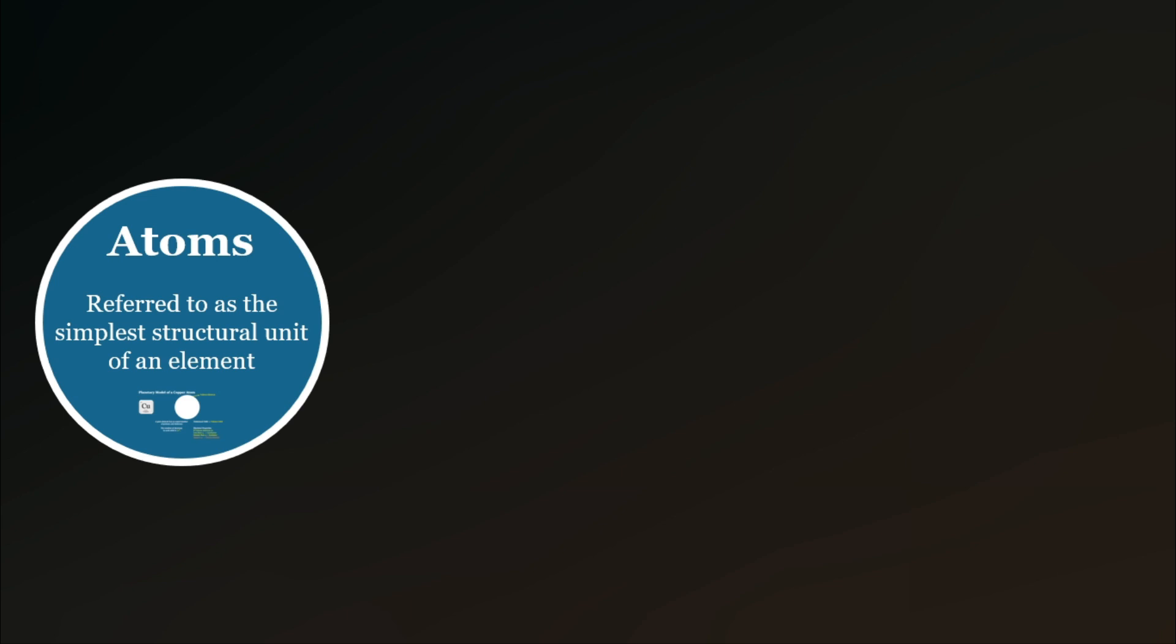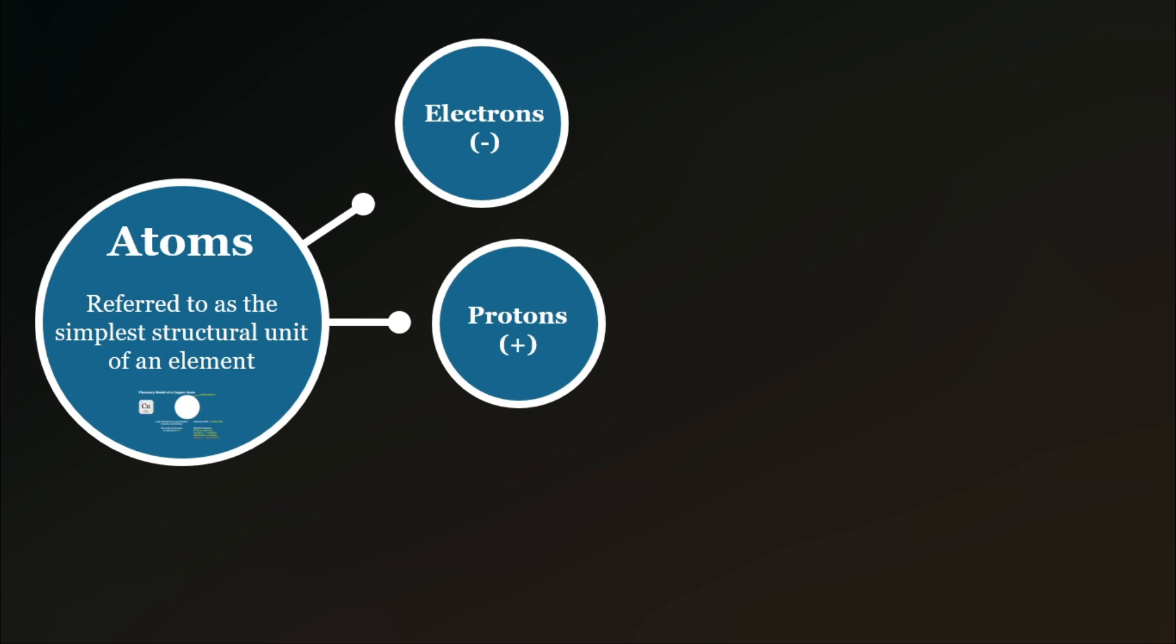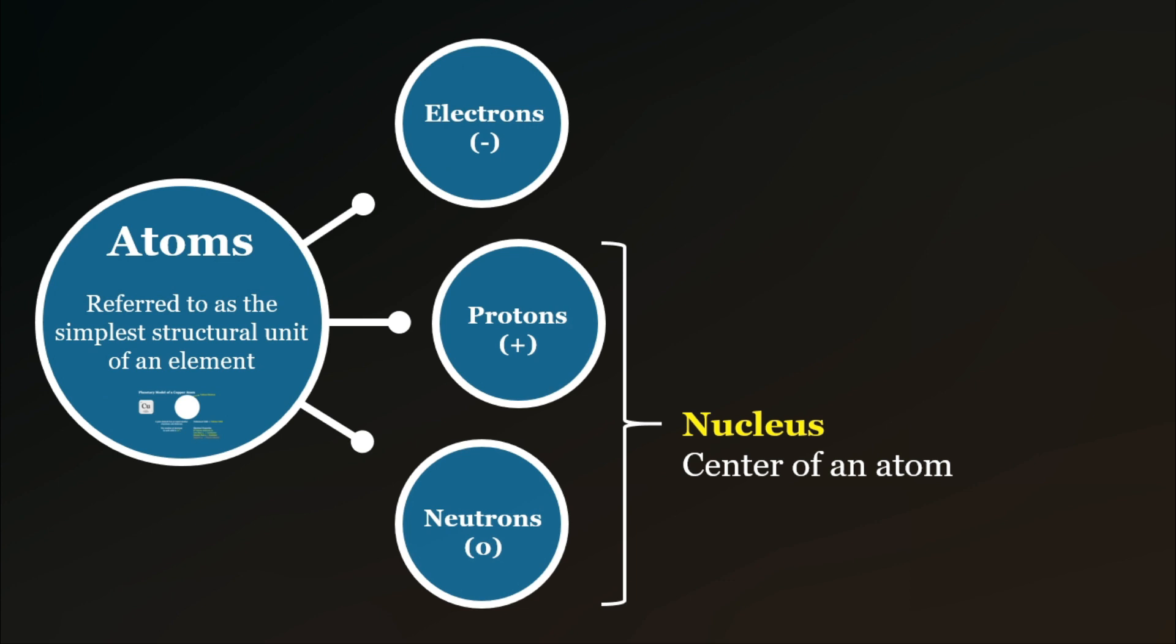So what are these subatomic particles? The subatomic particles are composed of the negatively charged electrons, positively charged protons, and the no-charge neutrons. Both the protons and the neutrons are found at the atom's center, also known as the nucleus, in accordance with the planetary model of an atom.